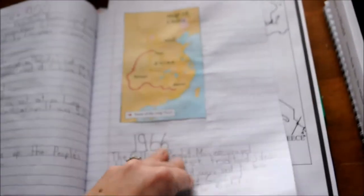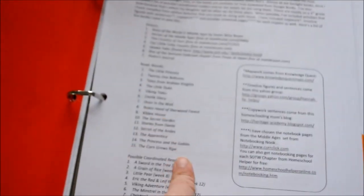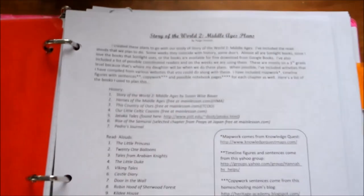So it doesn't have to be super complicated, and that's what we use, and I'll link that down below. Link Paige Hudson's plan down below. Hopefully I can remember to link it. So anyway, that's what we're using for history.